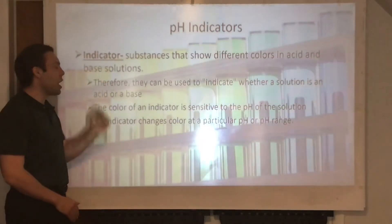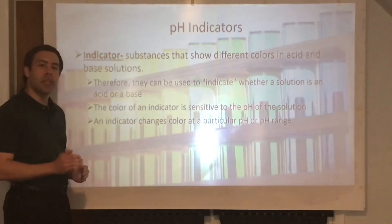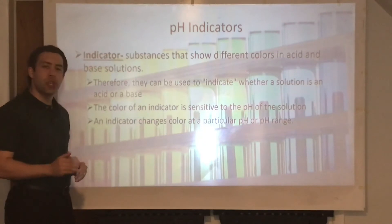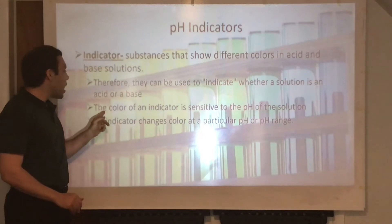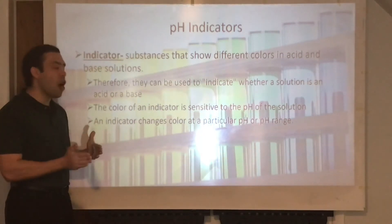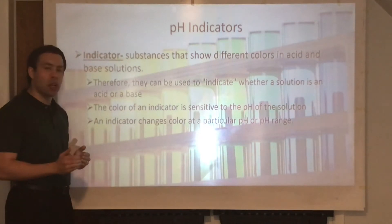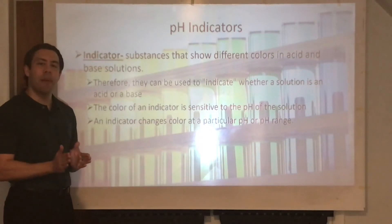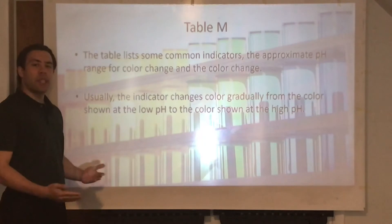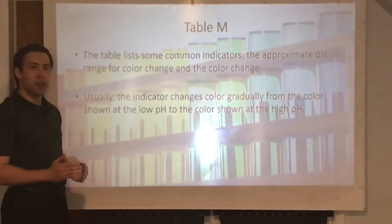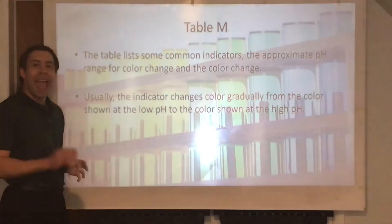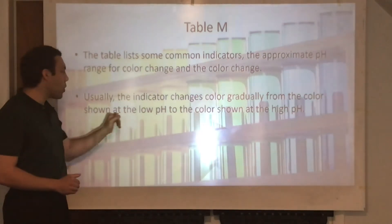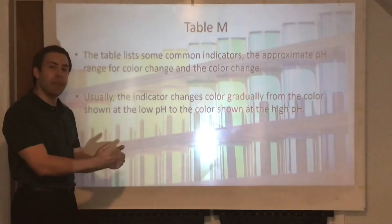Finally, we have pH indicators. An indicator is a substance that shows different colors in acid and base solutions. Therefore, they can be used to indicate whether a solution is an acid or a base based on their color. The color of the indicator is sensitive to the pH of the solution — an indicator changes color at a particular pH or pH range. Table M of your chemistry reference tables has common acid and base indicators.